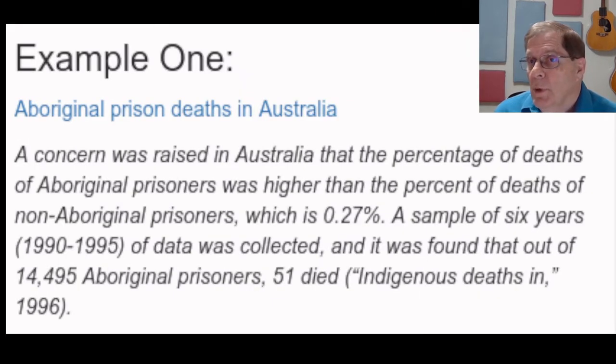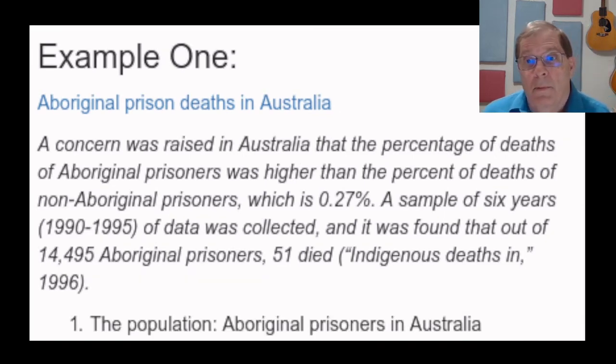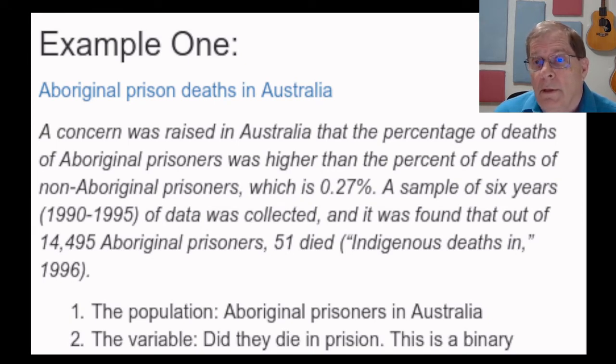A concern was raised in Australia that the percentage of deaths of Aboriginal prisoners was higher than the percent of deaths of non-Aboriginal prisoners. The population, of course, are Aboriginal prisoners in Australia. The variable is a categorical variable. Did they die while they were in prison?